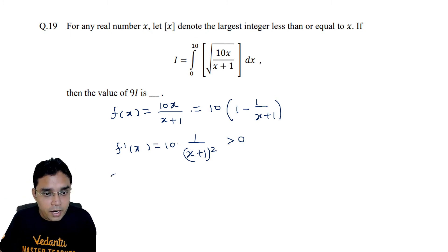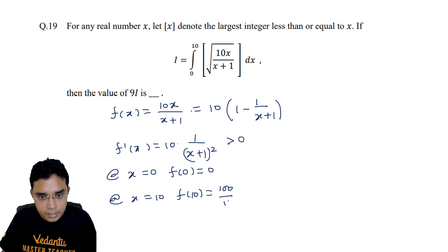Now at x equals 0, we can check f(0) is 0, and at x equals 10, f(10) is equal to 100/11, which will be 9.09, I think 9 only.